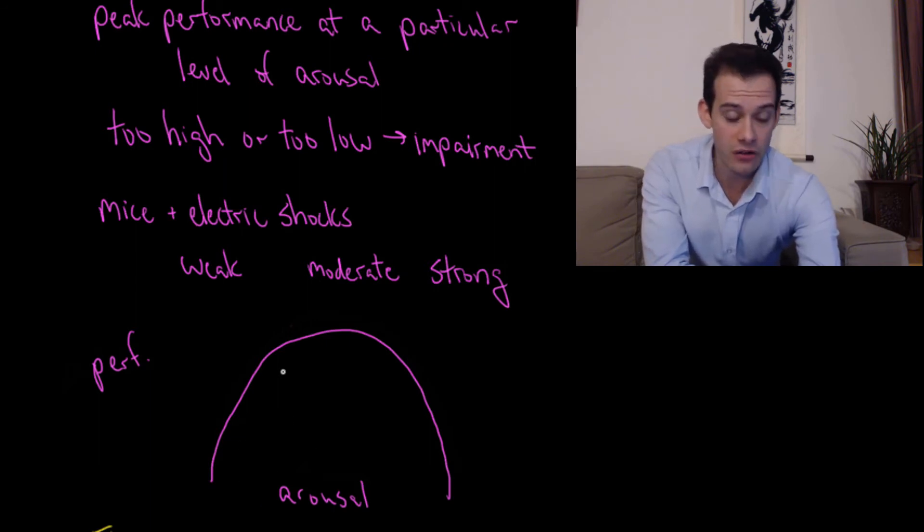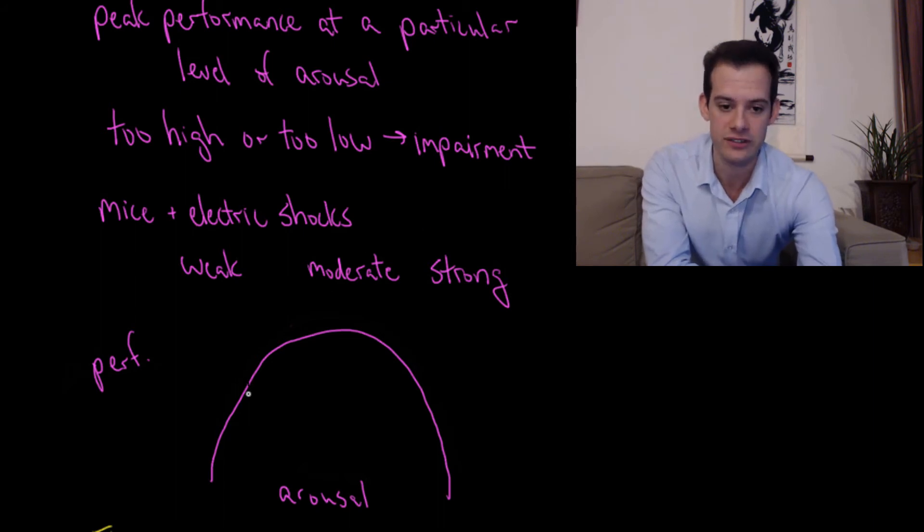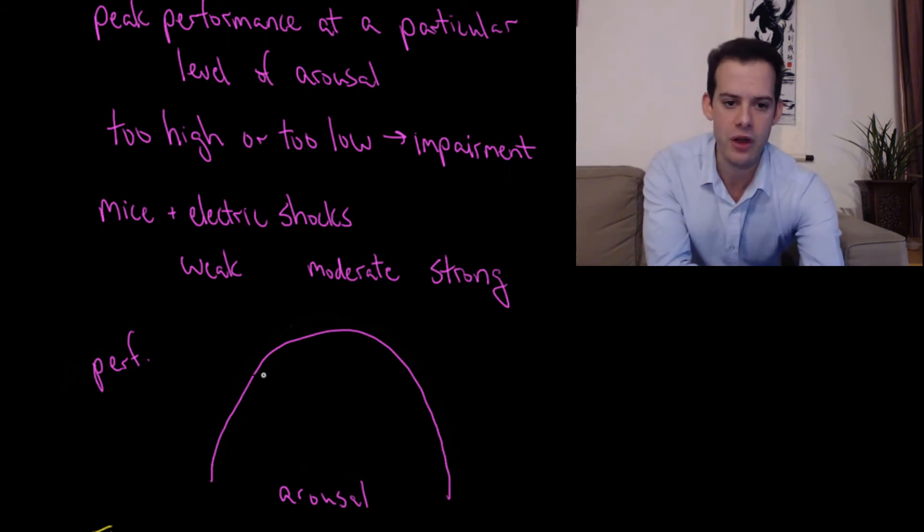Now I should also note that Yerkes and Dodson didn't always find this inverted U-shaped curve. This might often be the case, but for very simple tasks, they actually found that your level of arousal could increase your performance almost continuously. In other words, if you're doing something very simple, then higher and higher levels of arousal, you get better and better at the task. But most of the time, we're going to think about more complex behaviors where you're going to see something like this U-shaped curve.